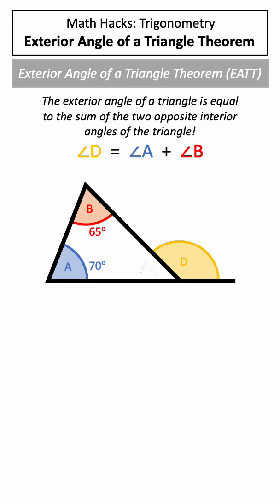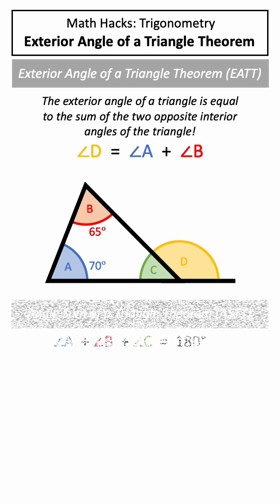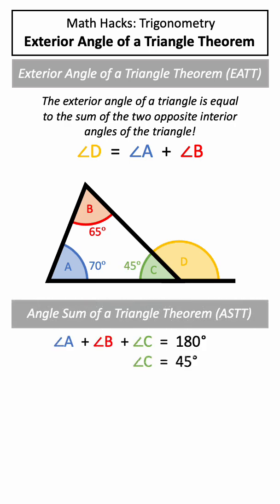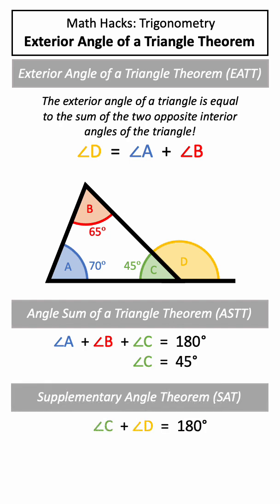Another way we could have solved this problem would be first to solve for angle C. Using the angle sum of a triangle theorem, we could determine that angle C is equal to 45 degrees, and then using the supplementary angle theorem, we could determine that angle D is equal to 135 degrees, the same answer as we got before.